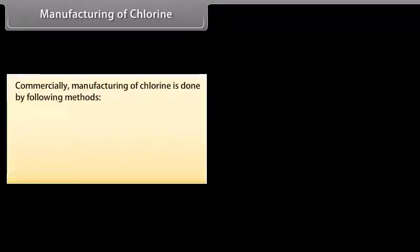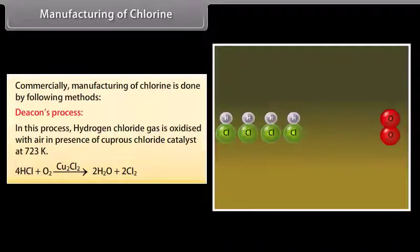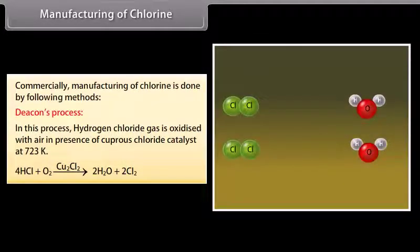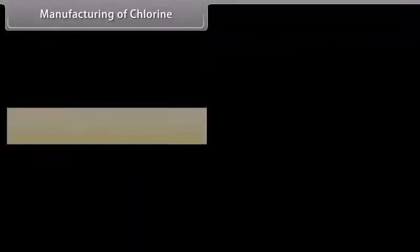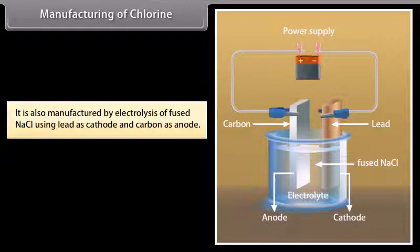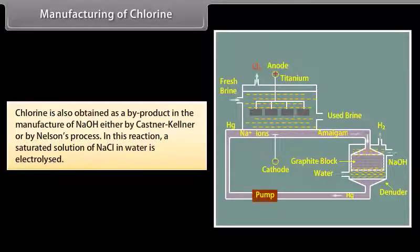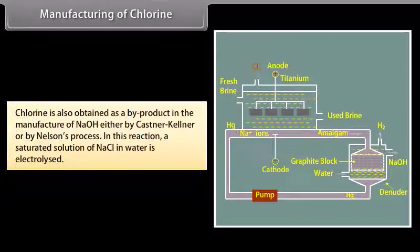Manufacturing of chlorine commercially is done by the following methods. In Deacon's process, hydrogen chloride gas is oxidized with air in the presence of cuprous chloride catalyst at 723 Kelvin. It is also manufactured by electrolysis of fused NaCl using lead as cathode and carbon as anode. Chlorine is also obtained as a by-product in the manufacture of NaOH by either the Castner-Kellner or Nelson's process, in which a saturated solution of NaCl in water is electrolyzed.